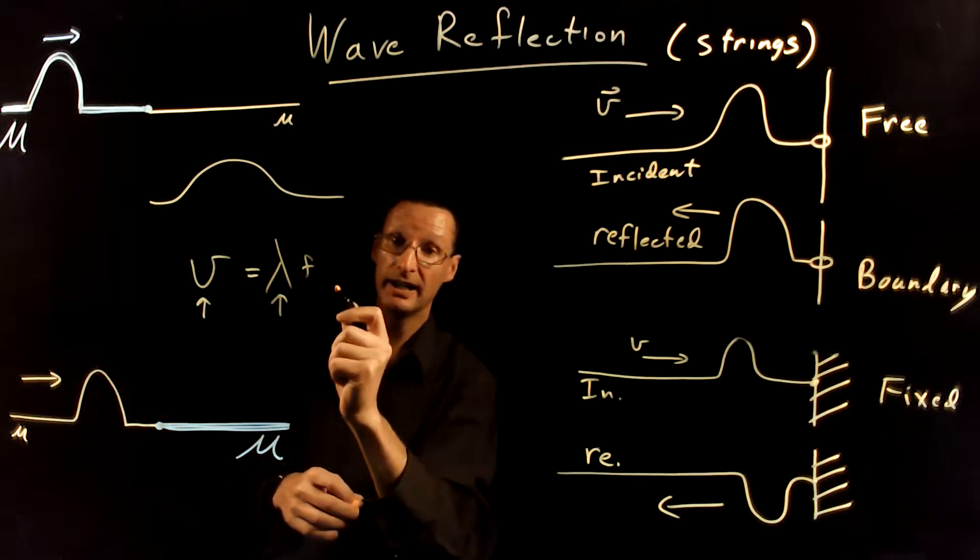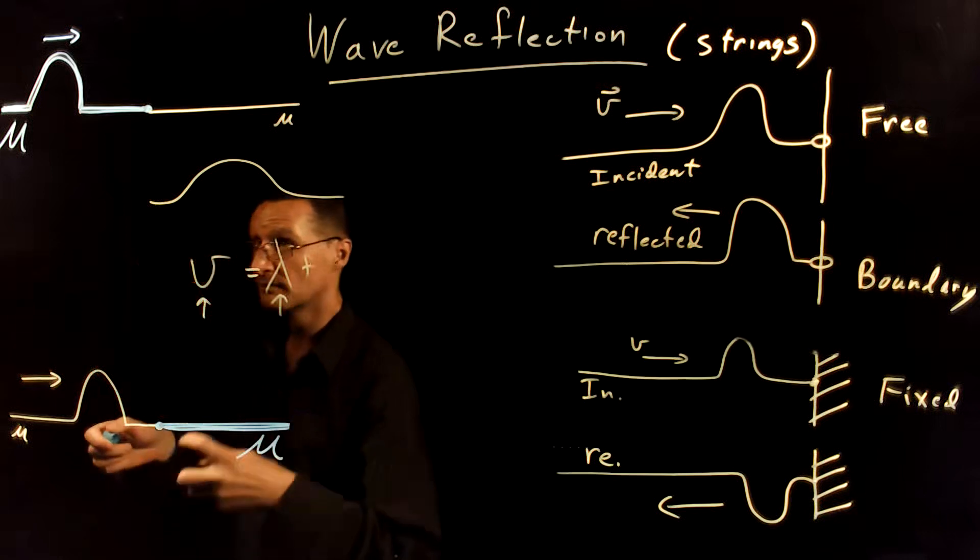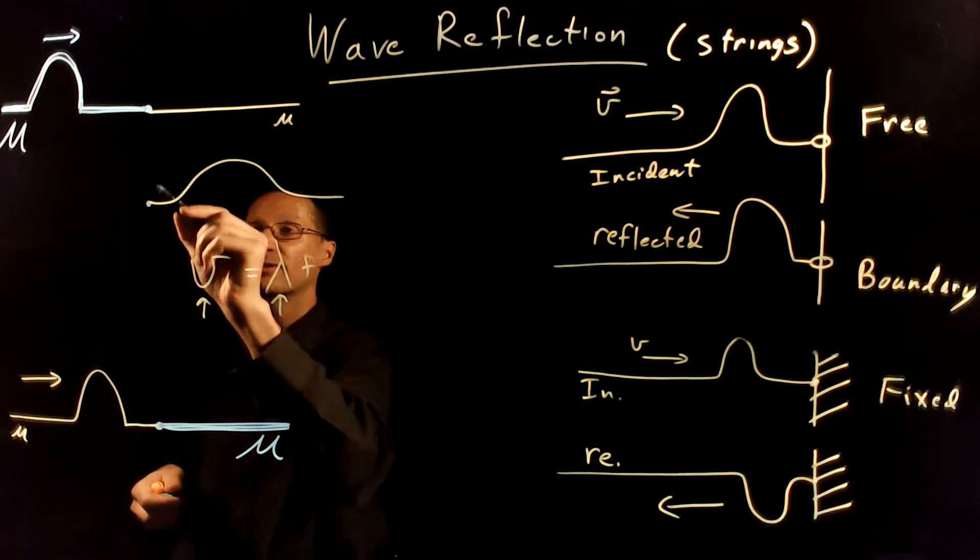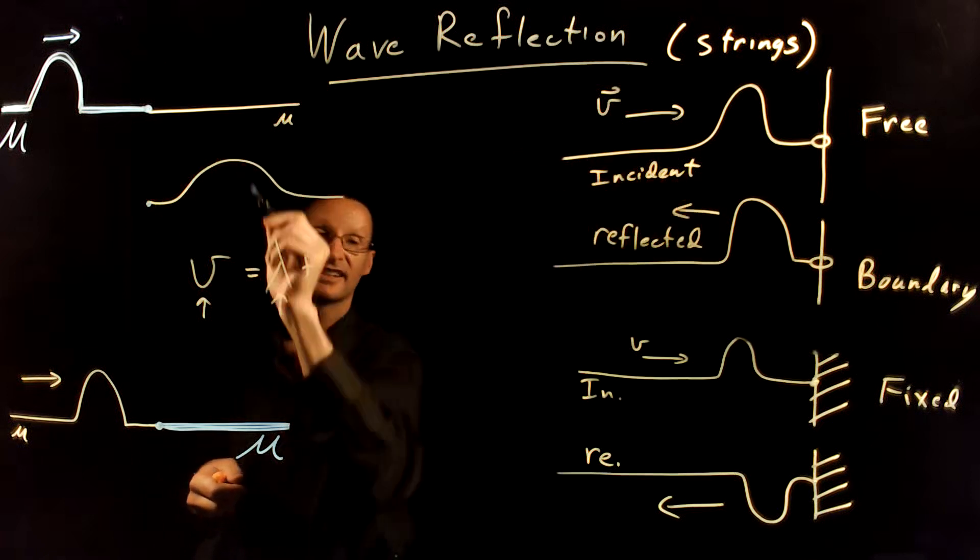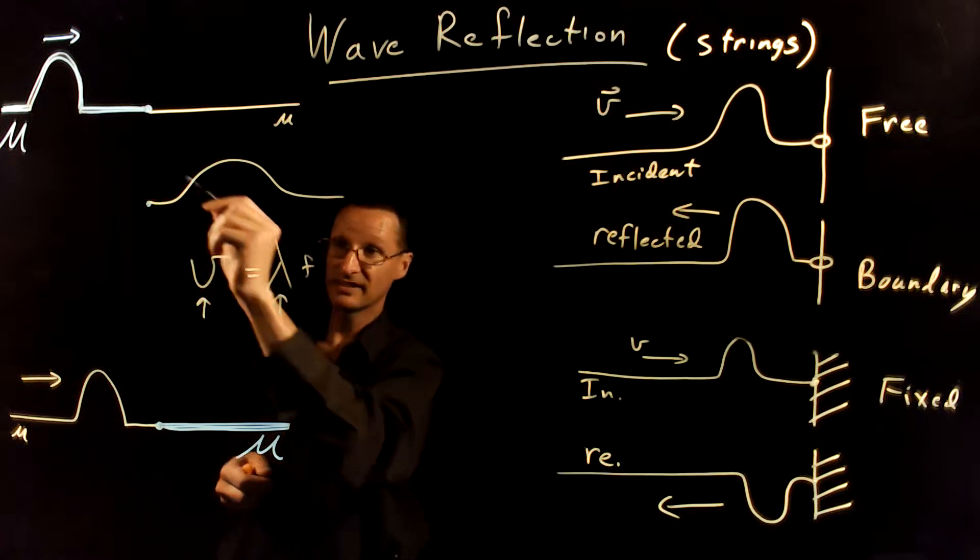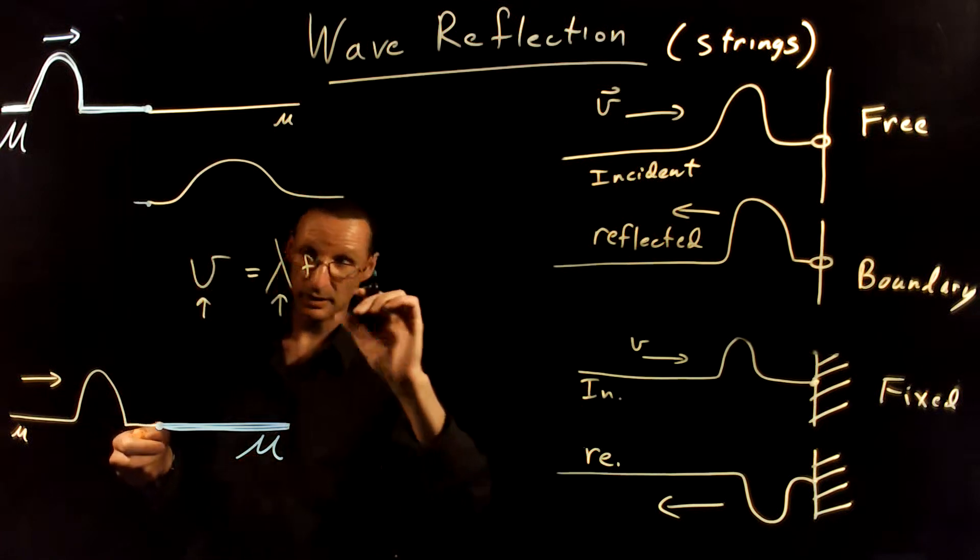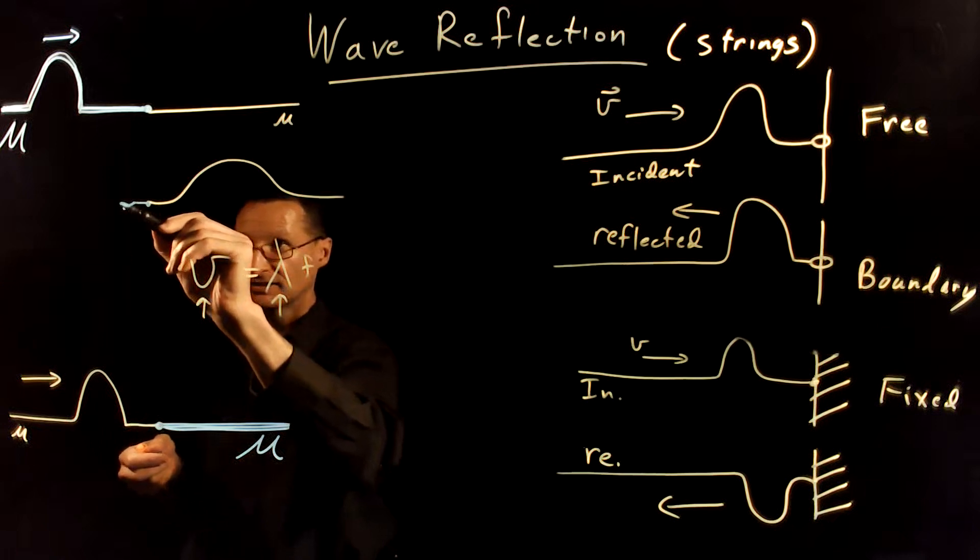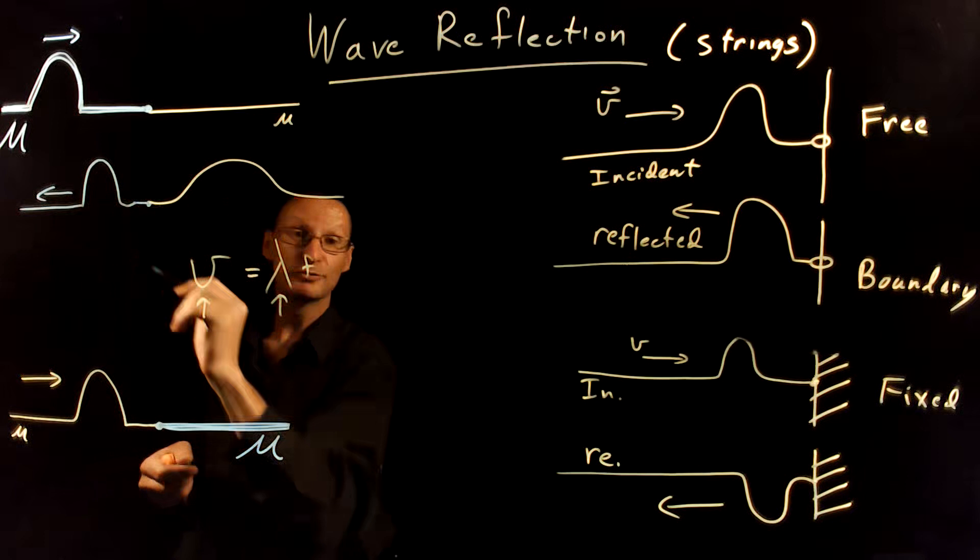Frequency is determined by the oscillations of the source. Now what happens at the boundary? This is kind of like the free end - it's more free to move and doesn't hardly notice this other string because it's so massive. The reflected wave here, which is going to have a smaller amplitude than the original, is going to be the same wavelength and it's going to be right side up or in phase, just like the original.